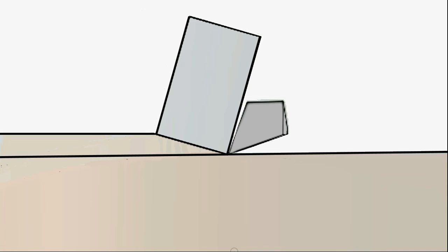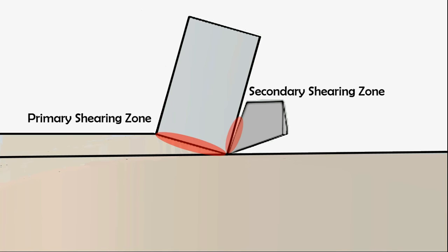This happens during metal cutting as well, so this zone is called the primary shearing zone which generates the maximum heat. There is also some rubbing of the tool with the chip and the workpiece. These zones are called secondary and tertiary shearing zones respectively.